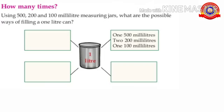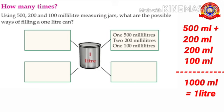See the next activity. How many times using 500, 200, and 100 ml measuring jars — what are the possible ways of filling a 1 liter can? Here we have to find out the possible ways of filling a 1 liter vessel using 500, 200, and 100 ml measuring jars. Remember, we can use only 500, 200, and 100 ml measuring jars. One is given for you: 1 time 500 ml, 2 times 200 ml, and 1 time 100 ml. When 1 time 500 ml, 2 times 200 ml, and 1 time 100 ml are added together, we get 1000 ml, which is equal to 1 liter.